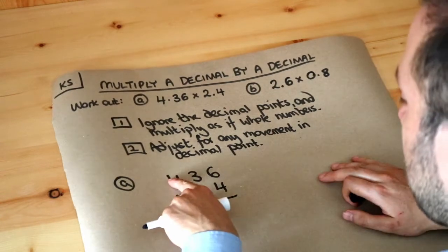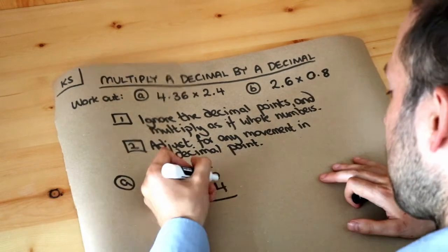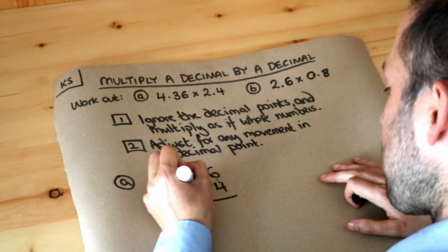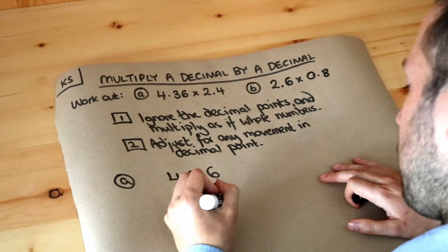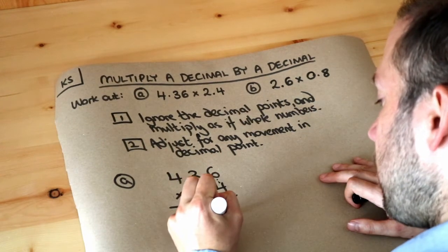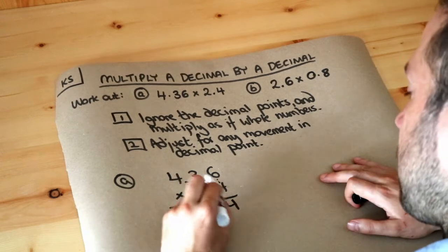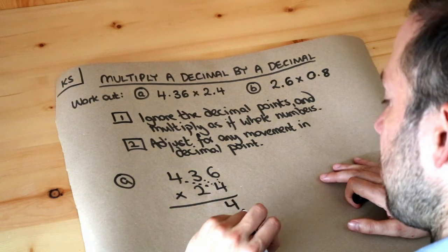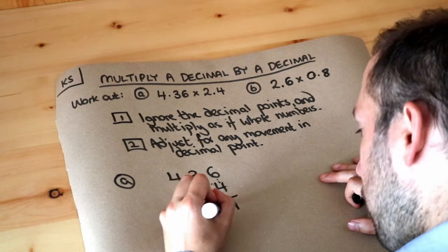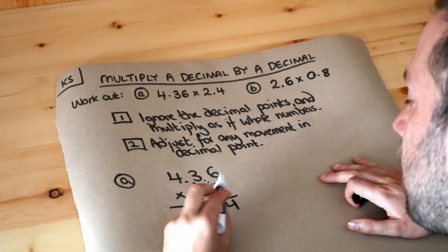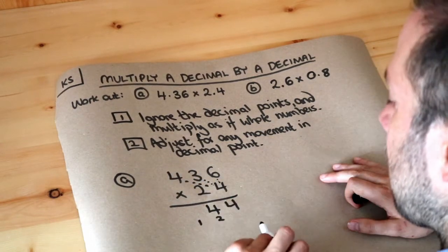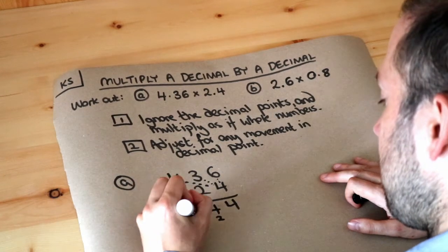So we times each of the 4, 3, and 6 by the 4 first. 6 times 4 is 24, write the 4, carry the 2, and I'm going to do this quite quickly. 3 times 4 is 12 plus the carry 2 is 14, so we put the 4, carry the 1, and 4 times 4 is 16 plus the carried 1 is 17.